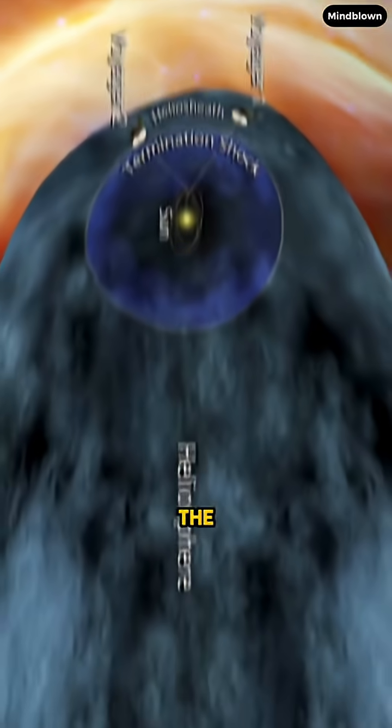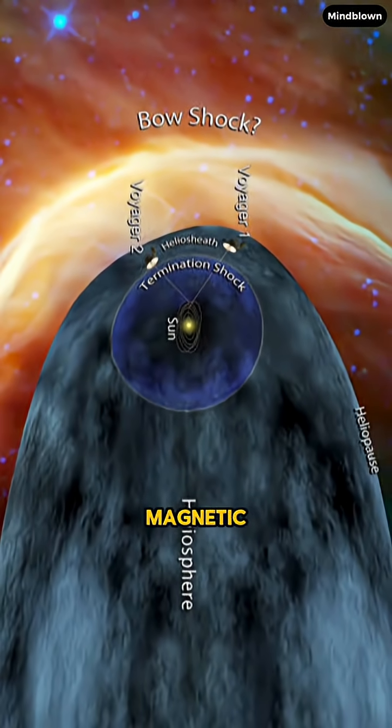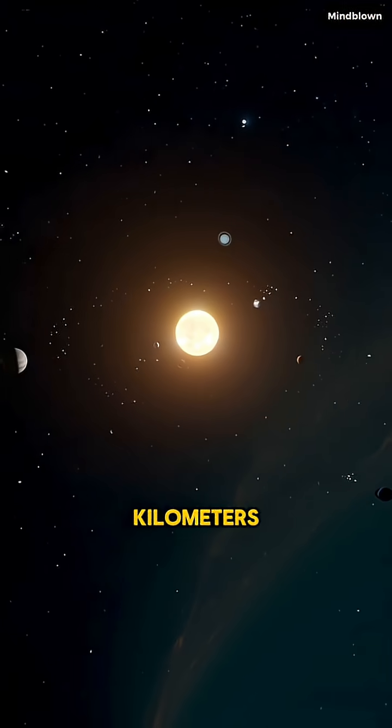The outer edge is called the heliosphere, where the sun's magnetic field stops. It's 18 billion kilometers from the sun.